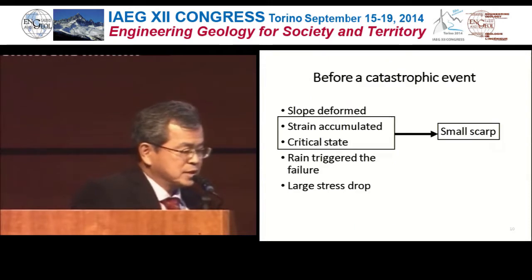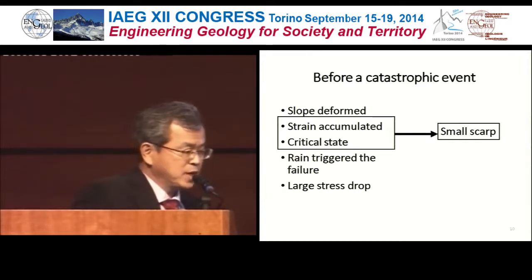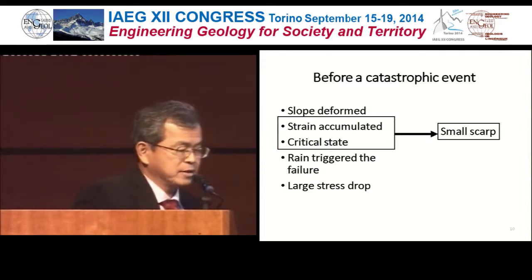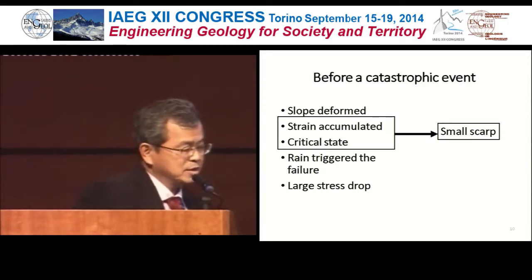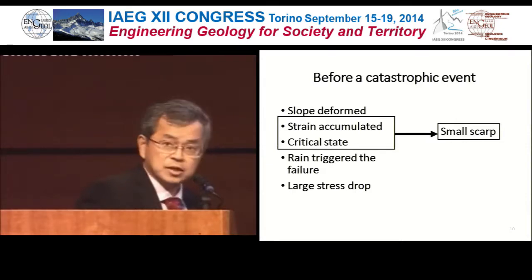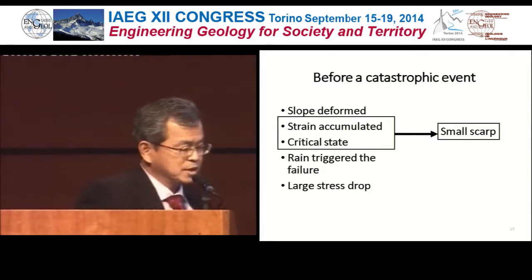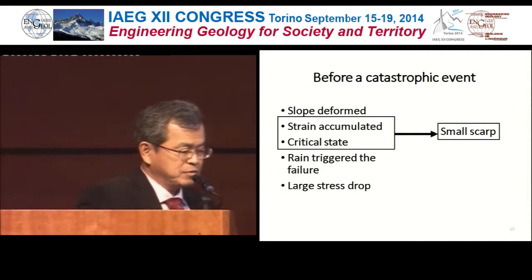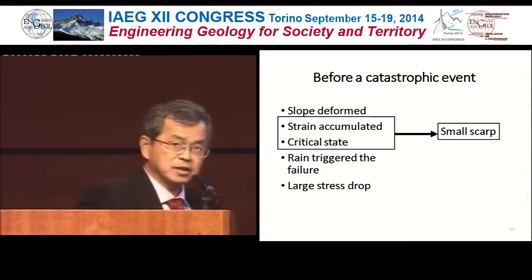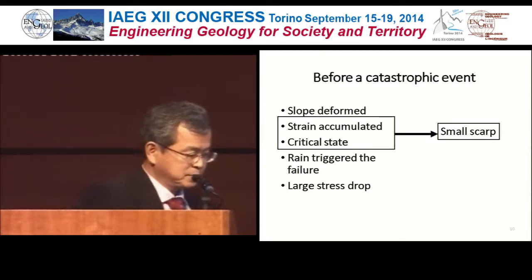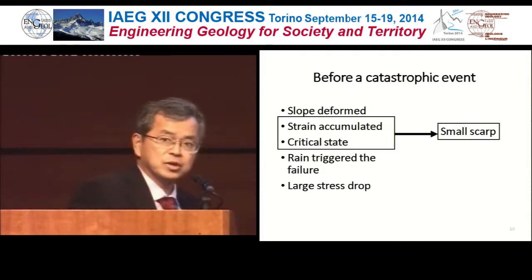Before a catastrophic event, the slope deformed, strain accumulated, a kind of critical state was reached, and rain triggered the failure, causing a large stress drop. This strain accumulation and critical state appeared as small scarps in many landslides. We must note that this landslide had a sliding surface along a gently undulating thrust, which is characteristic of an accretional complex.